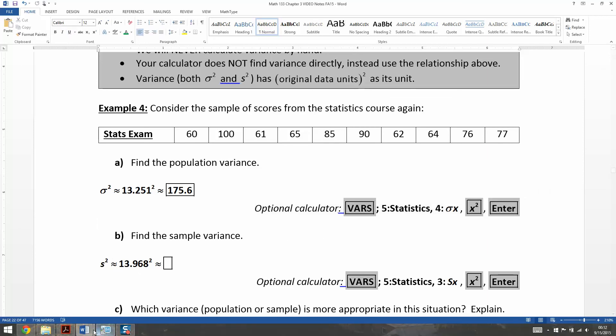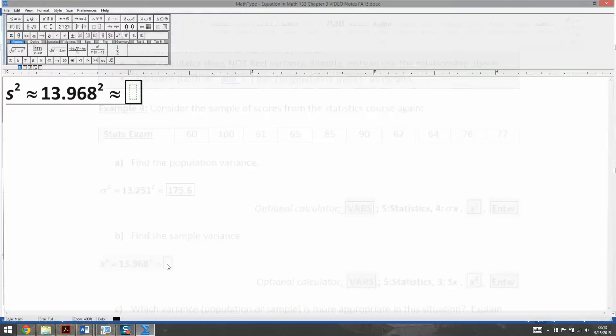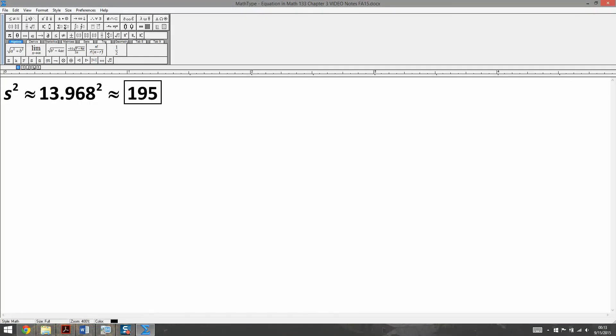So let me go to variables. Pick number five. This time I want number three because I want SX. So I'm going to grab that. I'm going to hit squared, enter. And there we have it, 195.1 repeating. So let me type that. I'm even going to give a little repeating bar because that's what it deserves.